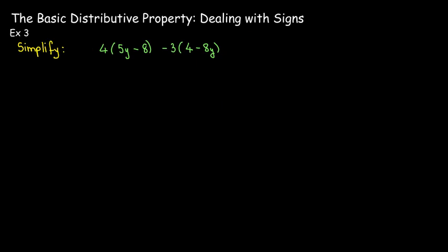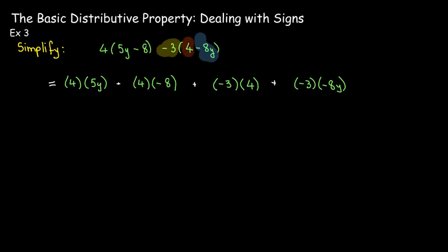Let's look at another example. Here I have two sets of parentheses, so I'm going to use the distributive property twice, and I've got to be careful with the signs. In the first set of parentheses, I have a positive 4, which will be multiplied by a positive 5y and then by a negative 8. In the second set, I have a negative 3 — I'm not looking at this as a minus sign or subtraction, but as a negative 3 times a positive 4 and times a negative 8y.